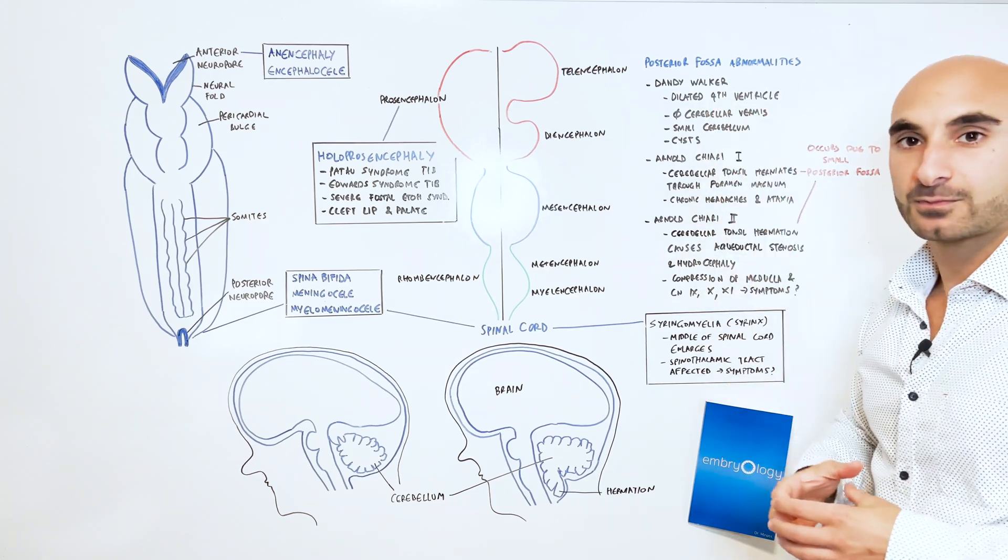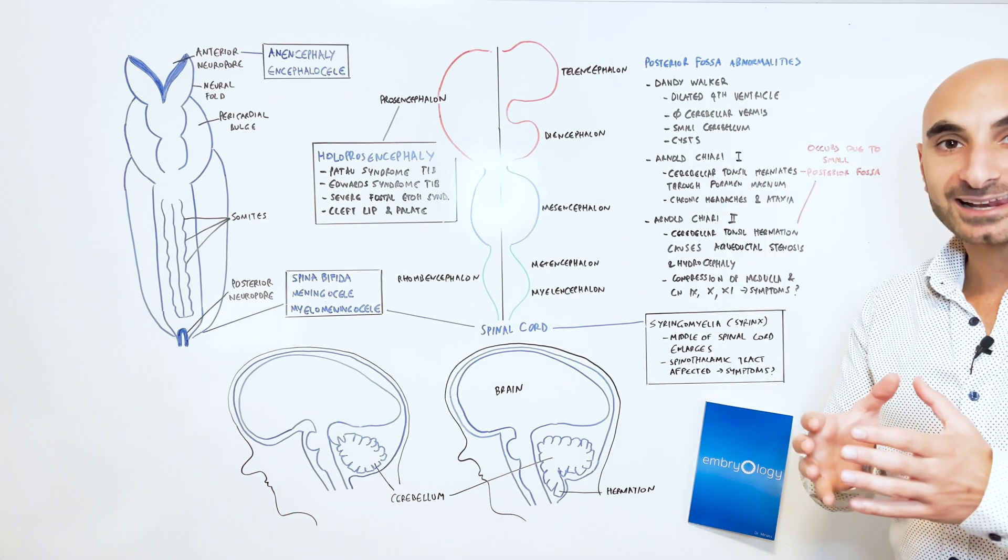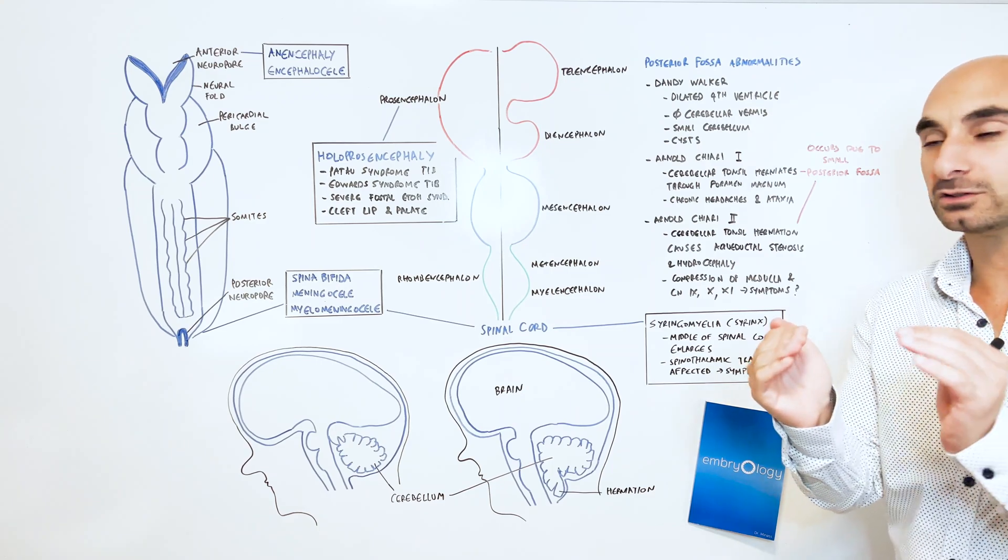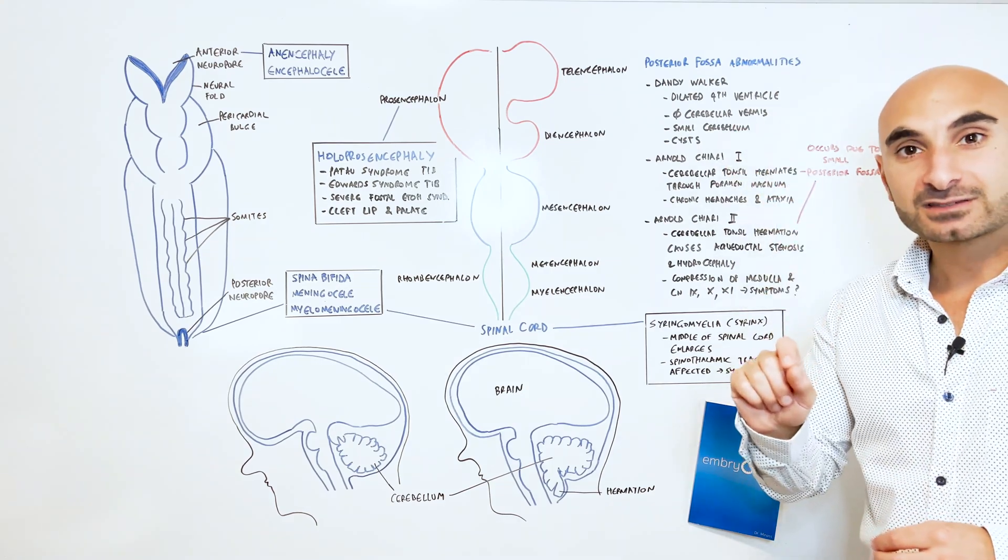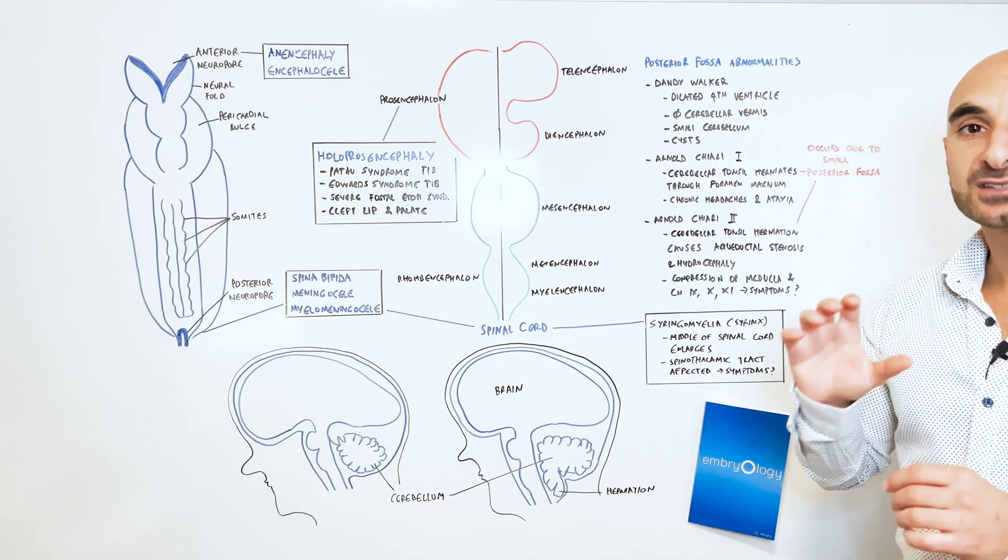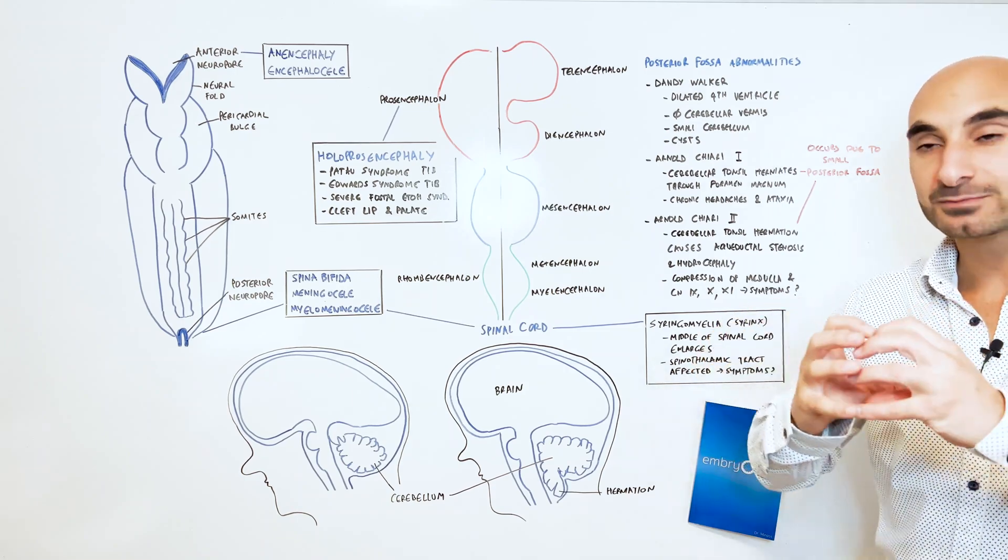Dandy-Walker syndrome, that's when you have a dilated or enlarged fourth ventricle. You won't see any vermis on the cerebellum and the cerebellum would overall be smaller.